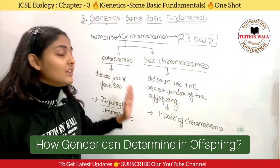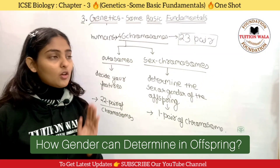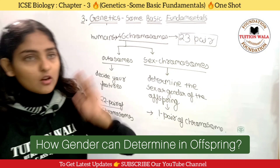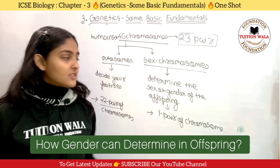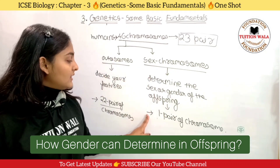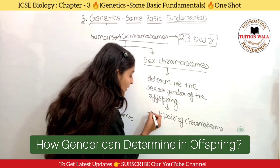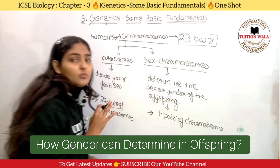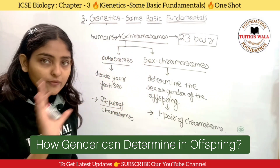Sex chromosomes will determine the gender of the offspring — whether the offspring will be a male or a female. You have one pair of sex chromosomes, and only one pair.